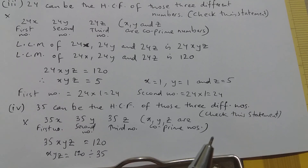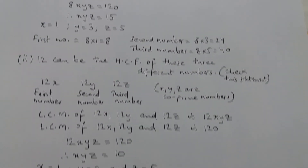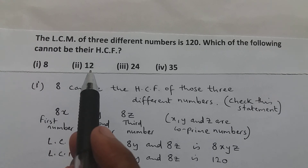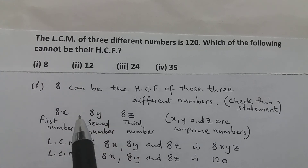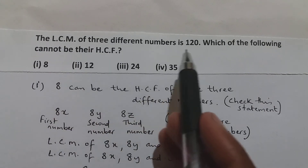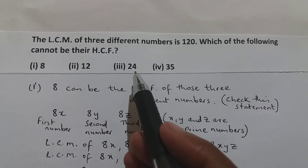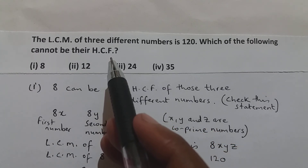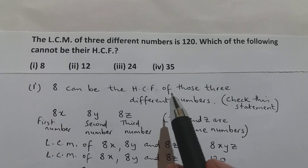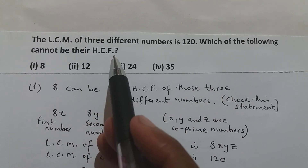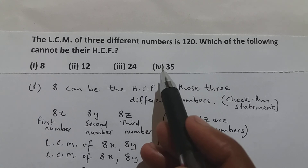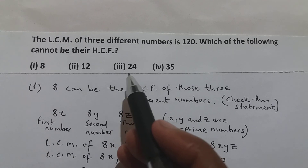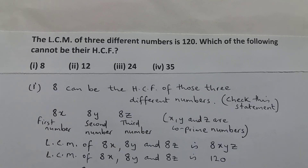So out of the four options, 8 and 12 can be the HCF of those three different numbers whose LCM is 120, whereas 24 and 35 cannot be the HCF. The correct answers for 'which cannot be their HCF' are option 3 (24) and option 4 (35). With that, I am closing this video.